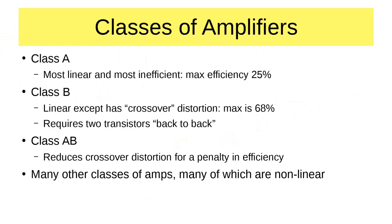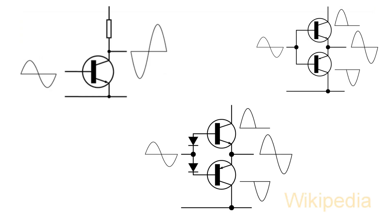Let's look at classes of amplifiers — only the linear ones. There are many other classes of amplifier, many of which are non-linear. Class C is used for CW and FM. Class D and E can do some amazing things with filtering, but class A, B, and AB are your classic linear amps. Class A is the most linear and most inefficient, with a maximum efficiency of about 25%.